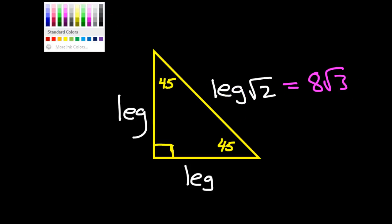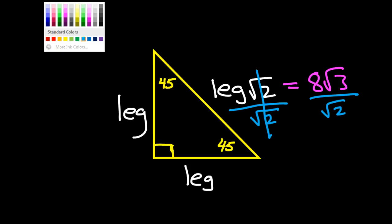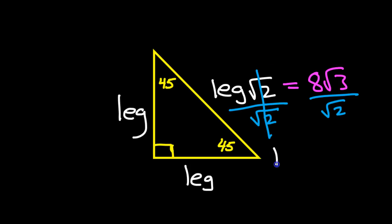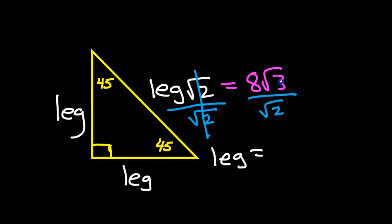Now, how would I do that? I would divide both sides by radical two, get leg by itself. So I'm going to divide both sides of this by radical two. That way, these cancel out, and I'm just left with leg equals. So it's just a matter of what is this? Eight radical three over radical two? I mean, this is the answer, but we need to simplify this in some way.